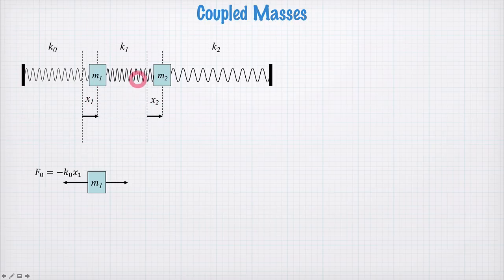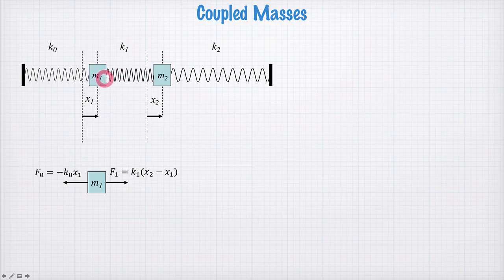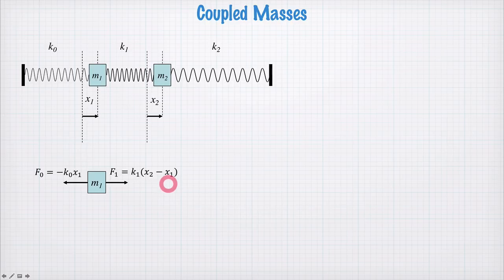If x1 and x2 move in unison, this spring stays at its equilibrium position and won't exert any force, so it'll be proportional to the difference between x1 and x2. Let's write it as k1 times (x2 minus x1) and check that we've got the sign correct. If we imagine extending x2 to be really enormous, this spring will be stretched and pulling mass m1 in the positive direction, so f1 is proportional to x2 in the right way. If x1 is really large, the spring becomes compressed and pushes mass m1 back in the opposite direction — so we have this sign correct.